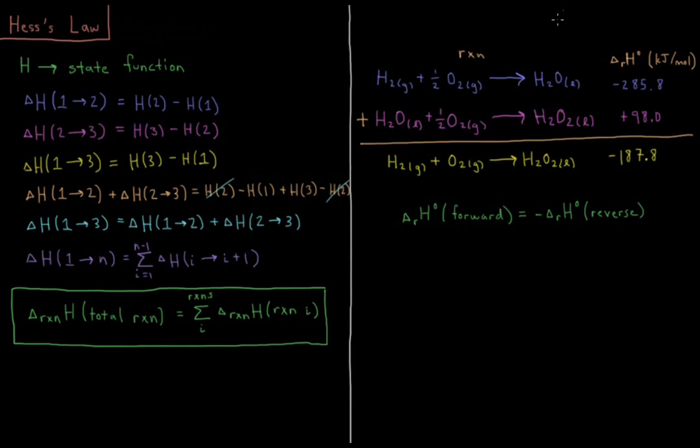If we want the enthalpy of reaction for H2 gas plus O2 gas gives us hydrogen peroxide liquid, we can say: what's the enthalpy of H2 plus 1/2 O2 going to H2O, and what's the enthalpy of H2O plus 1/2 O2 going to H2O2? This first reaction has a standard molar enthalpy of reaction of -285.8 kilojoules per mole.